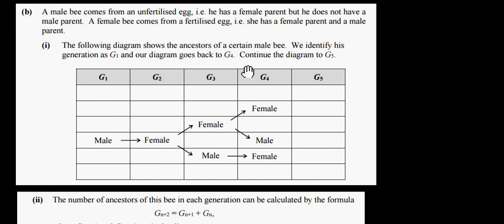This is a separate question about bees. A male bee comes from an unfertilized egg — he has a female parent but no male parent. A female bee comes from a fertilized egg, meaning she has both a female and a male parent. The diagram shows the ancestors of a certain male bee: the male bee has one female parent; that female has a female and a male parent; the male has just a female parent; and so on.